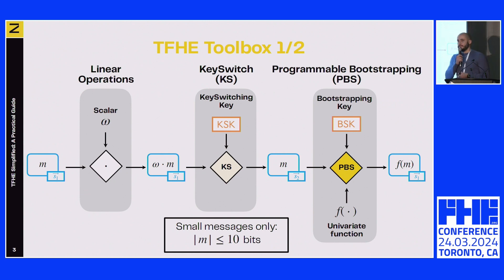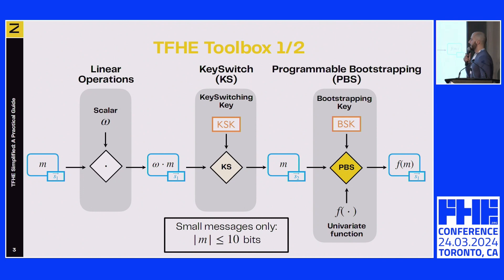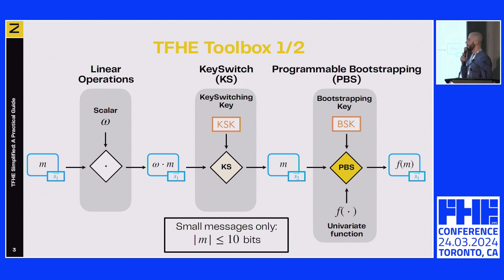Without going into full details, the first main tool in TFHE is programmable bootstrapping. This is what TFHE is most famous for. It is a fully homomorphic encryption scheme, so we have an operation to reduce noise along the computation. During this noise reduction, we can also compute a univariate function given as input. When computing a PBS, the output keys are generally different from the input keys, so we use a key switch first to ensure consistent encoding.